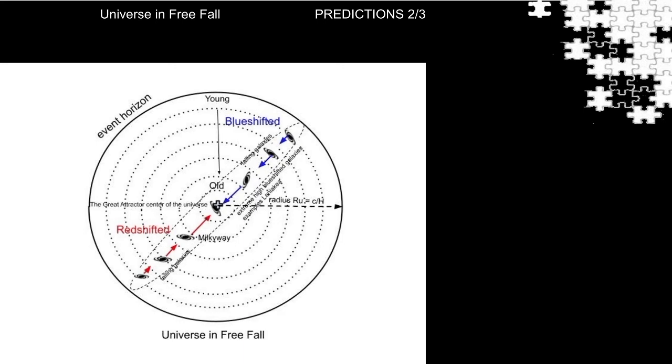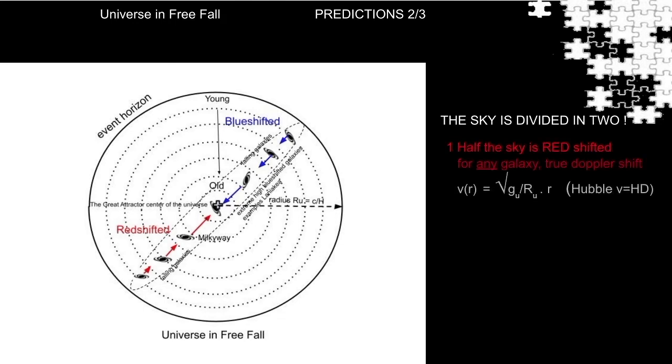With the center, we can predict more phenomena, and that is why the sky is divided in two. Half the sky is red shifted, the other half, opposite the Great Attractor, is blue shifted, because matter falls towards us.